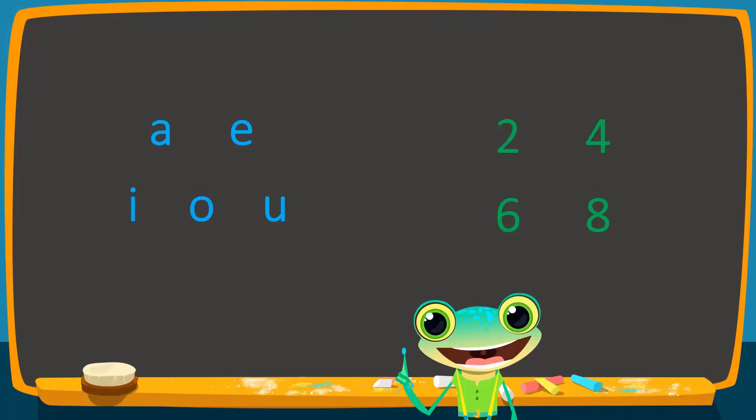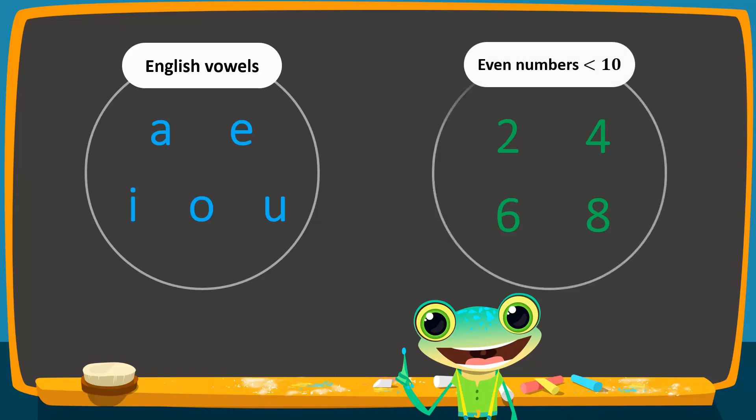Let's take a look at two more examples of sets. The set on the left contains the letters a, e, i, o, and u. Therefore, this is a set of vowels of the English alphabet. On the right, the objects are 2, 4, 6, and 8. Therefore, it is a set of even numbers that are less than 10. Observe that both sets have well-defined properties and every object is distinct.